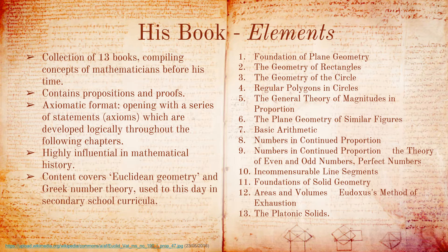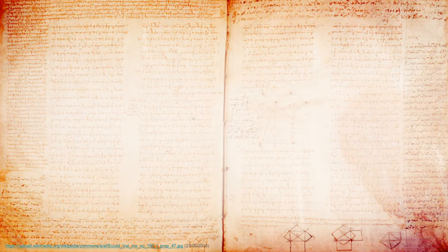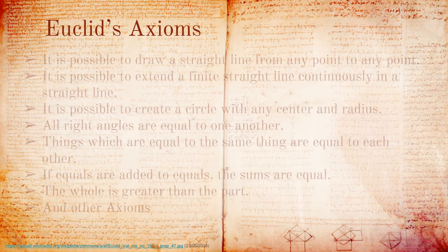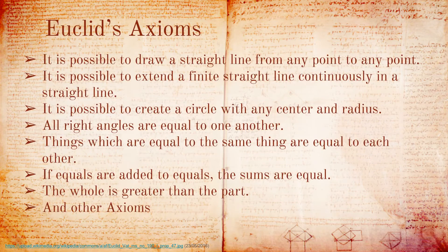In the text, mathematics is formatted axiomatically. A number of axioms, or mathematical statements, were assumed at the beginning of the book, and the information following is derived logically from these axioms. Elements consists of 13 books with a collection of definitions, postulates and proofs, covering Euclidean Geometry and the ancient Greek number theory.